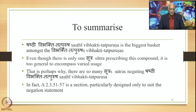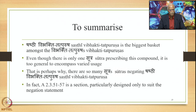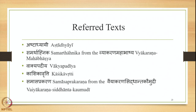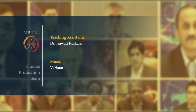To summarize: Shasthi Vibhakti Tatpurusha is the biggest basket among the Vibhakti Tatpurushas. Even though only one Sutra prescribes it, it is too general, which is perhaps why so many Sutras negate it — in fact, the section 2.3.51–57 is particularly designed only to serve the negation statement. These are the traditional textual sources we referred to, and we shall deal with the other negations of Shasthi Tatpurusha Samasa in coming lectures. Thank you for your patience.